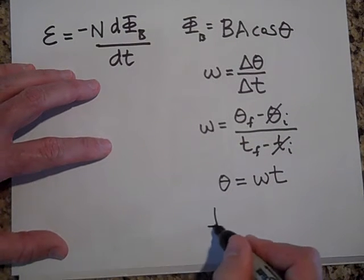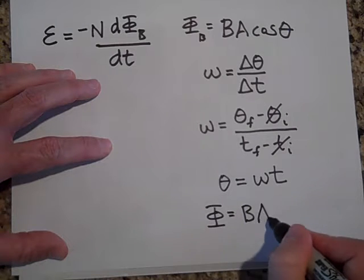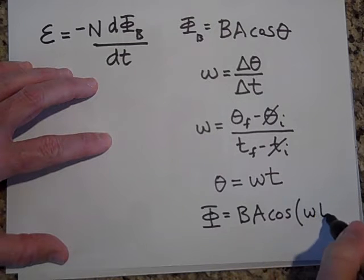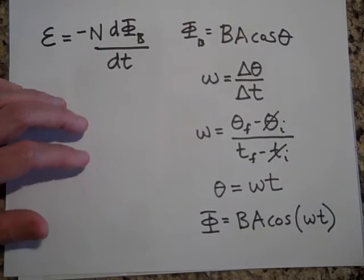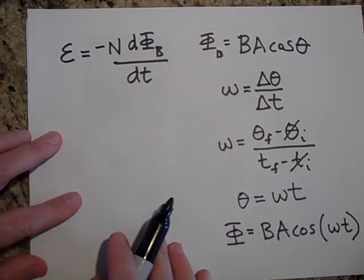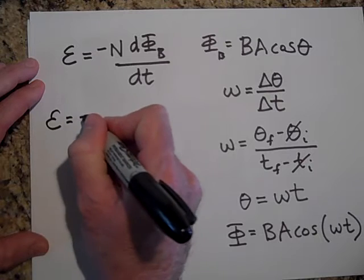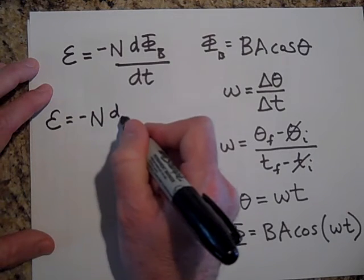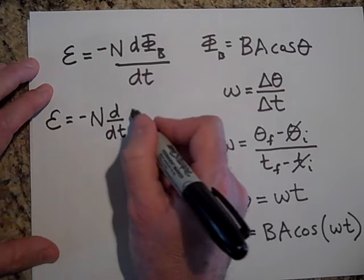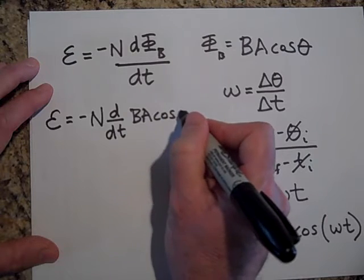Okay, so my flux is going to be equal to B times A times the cosine, and I'm not going to write theta this time, but I'm going to write omega T. Well, that's what's going to go into here. So I come on over here, and I'm going to say that the EMF induced is negative N, the derivative with respect to time of the flux. Now, this is the flux: B A times the cosine of omega T.